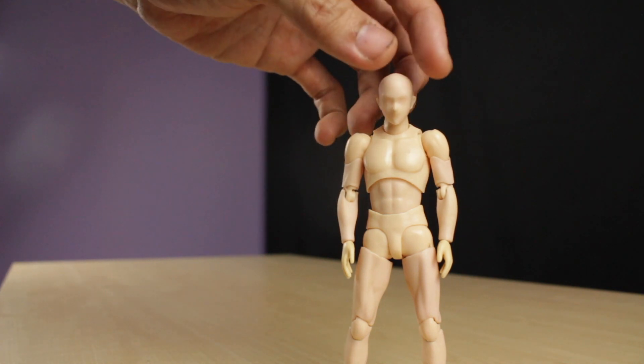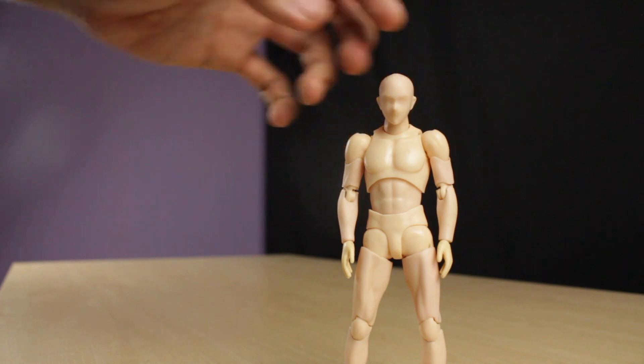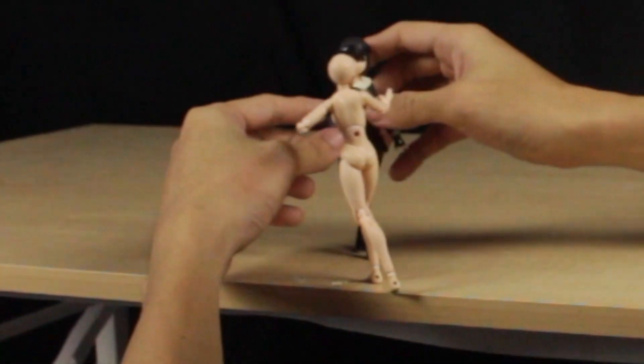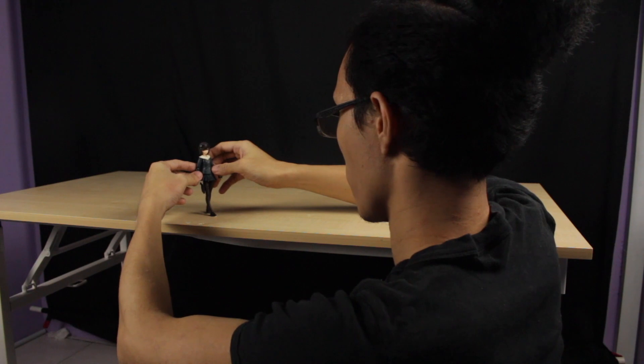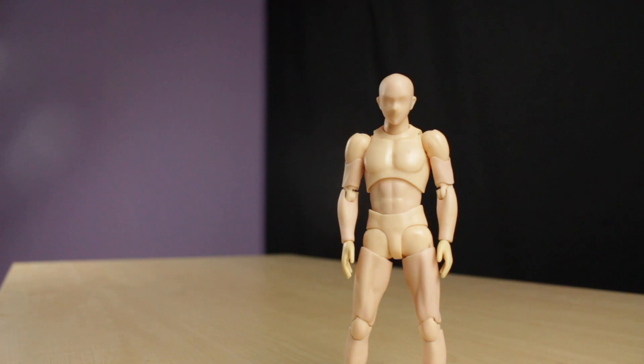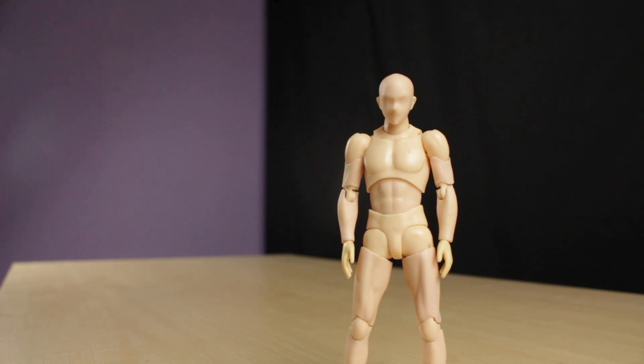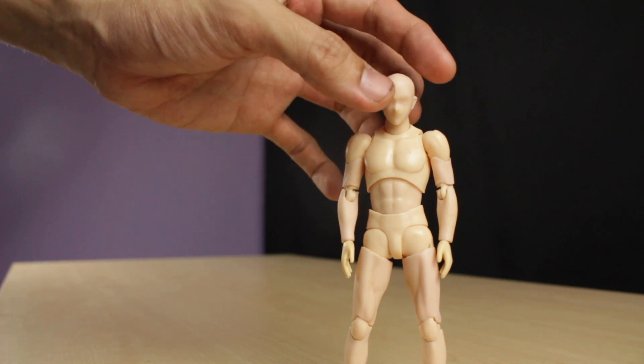One thing that's worth noting is the durability of this figure. As you animate stop motion, you might occasionally drop or cause the object that you are manipulating to drop, possibly damaging them. After animating with Bodykun for quite some time, I can tell you that this is probably one of the most durable figures I have animated with.